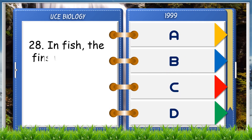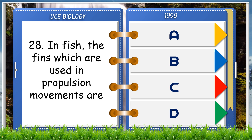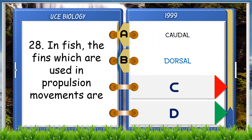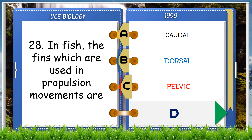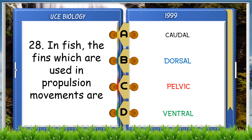In fish, the fins which are used in propulsion movements are: A. Caudal, B. Dorsal, C. Pelvic, D. Ventral. The answer is A, caudal.